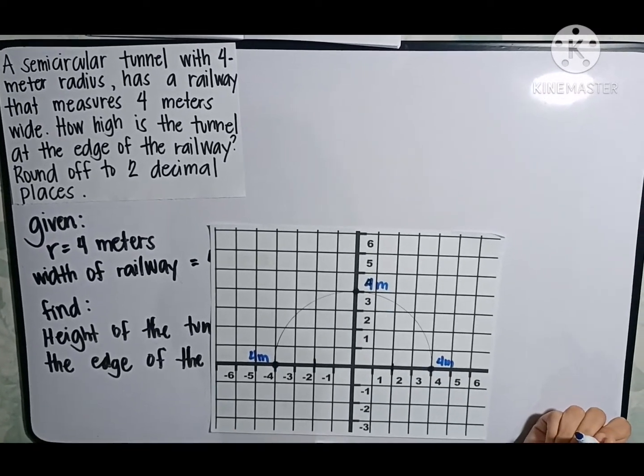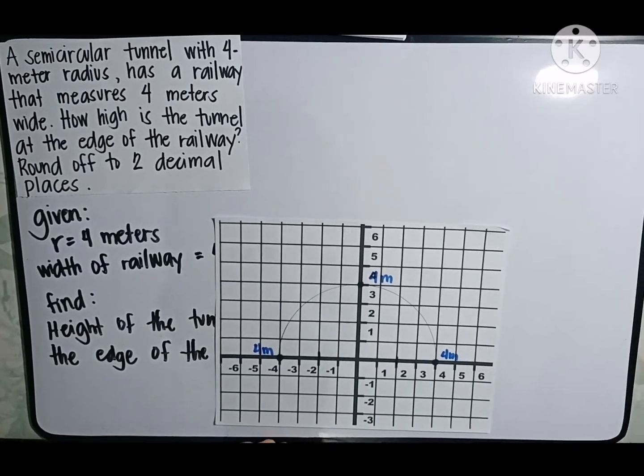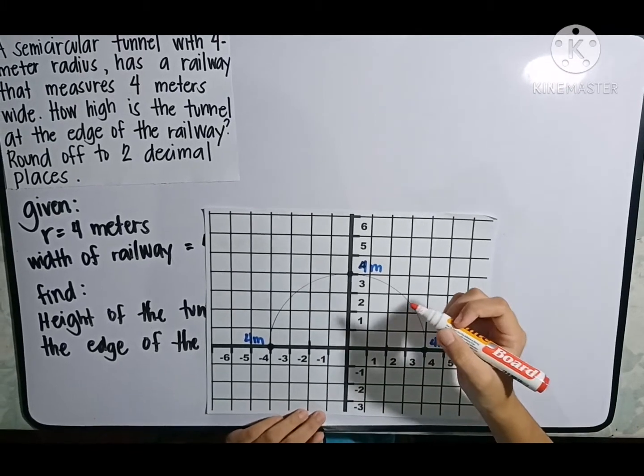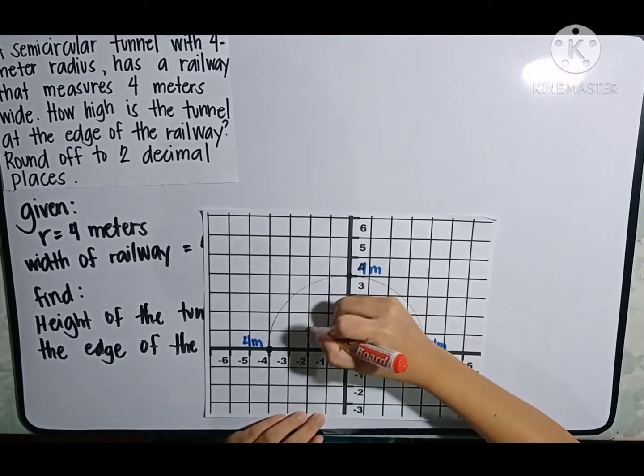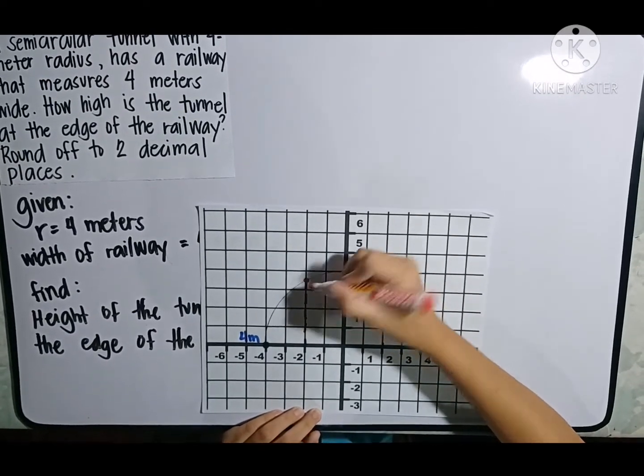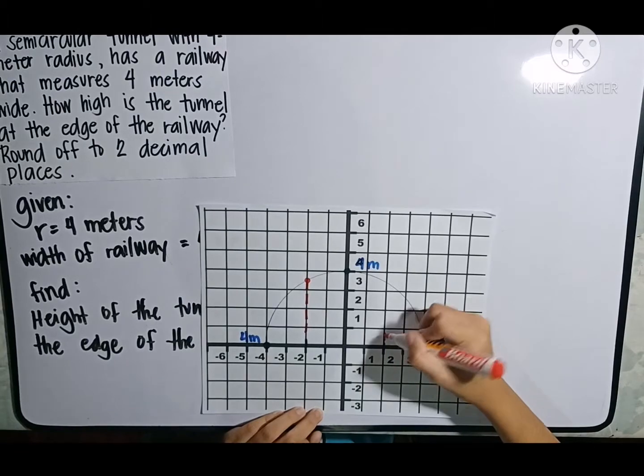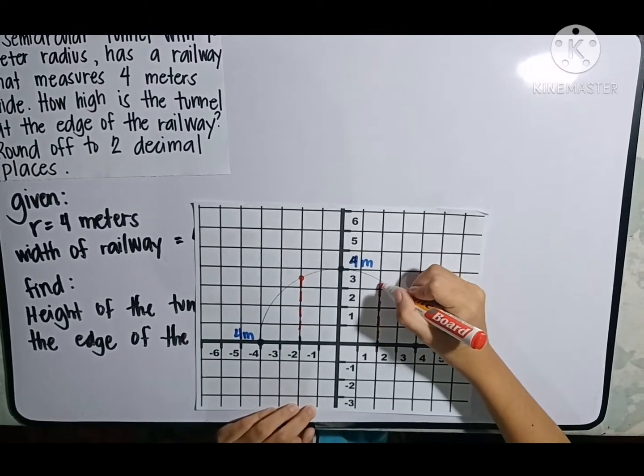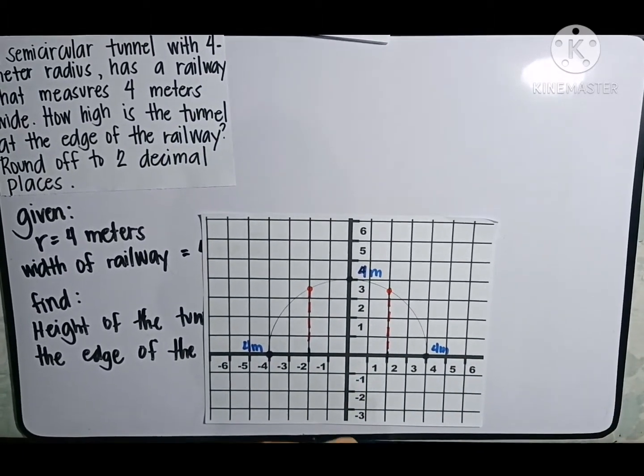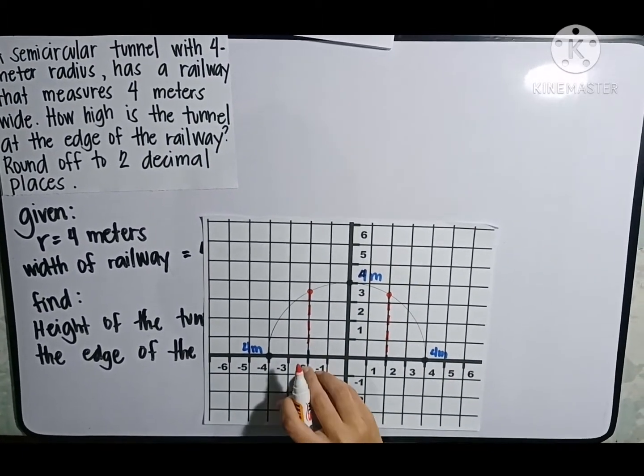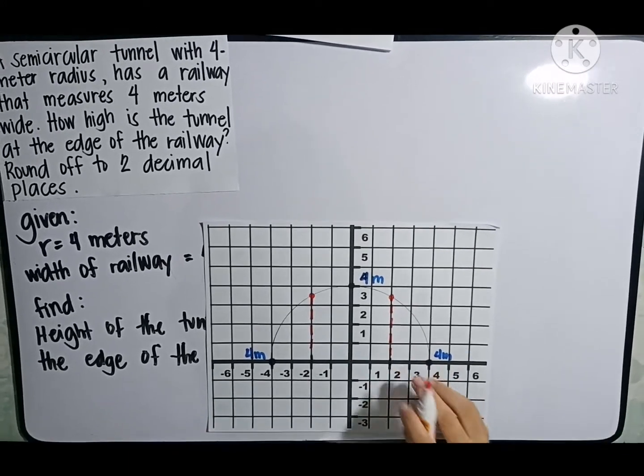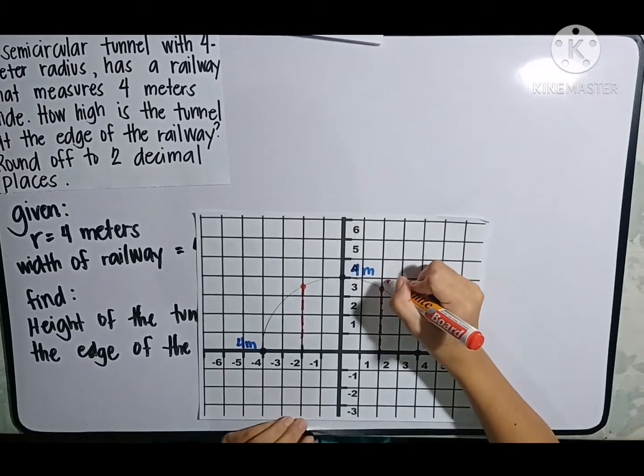Now, let us include what is asked for. Let us illustrate it as broken lines. The height of the tunnel at the edge of the railway is up to here. And also from the other side, up to here. What I'm going to find from this side is also the exact same answer from this side. So I'm going to use this one and plot it as point P.